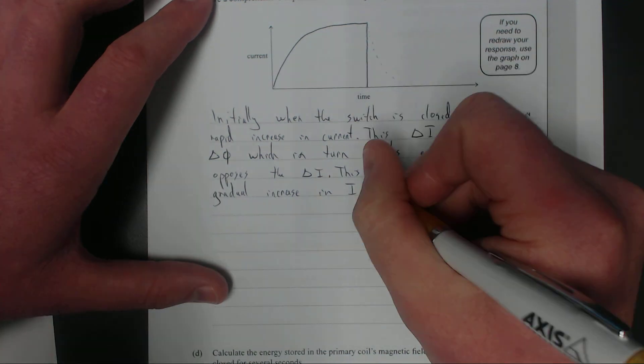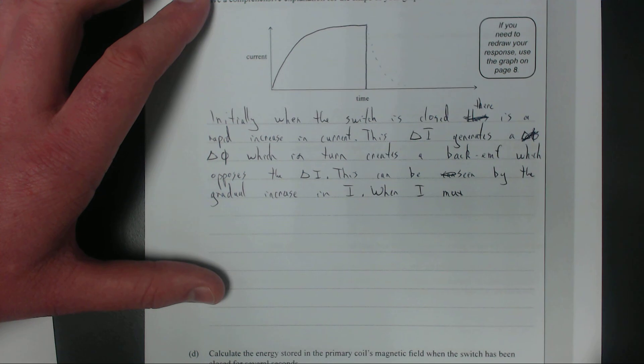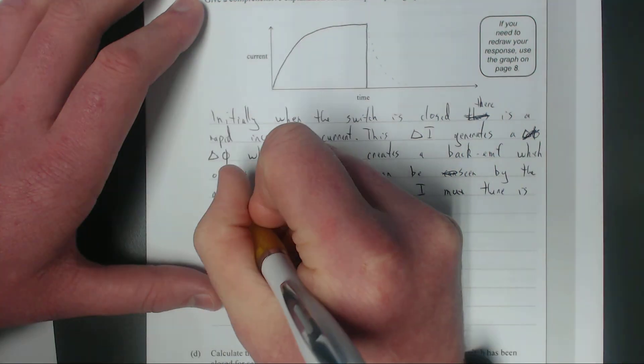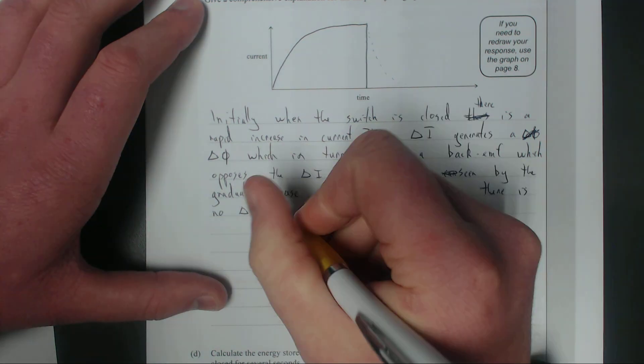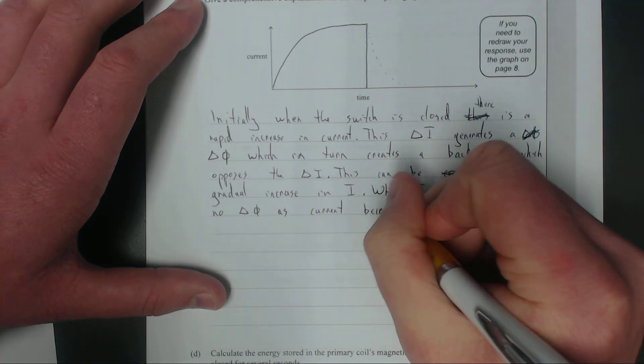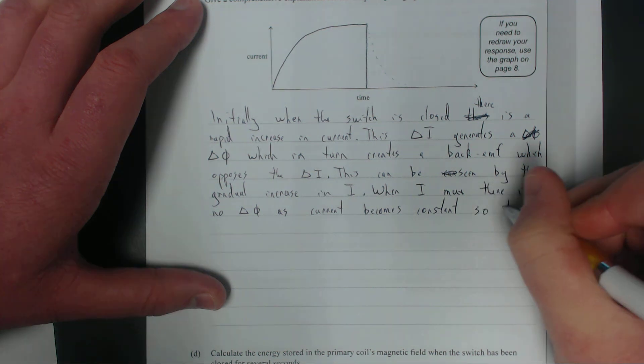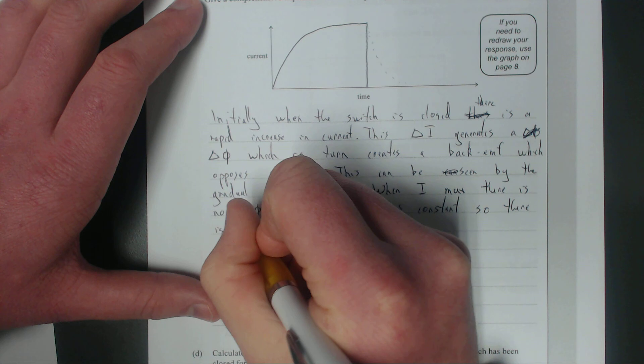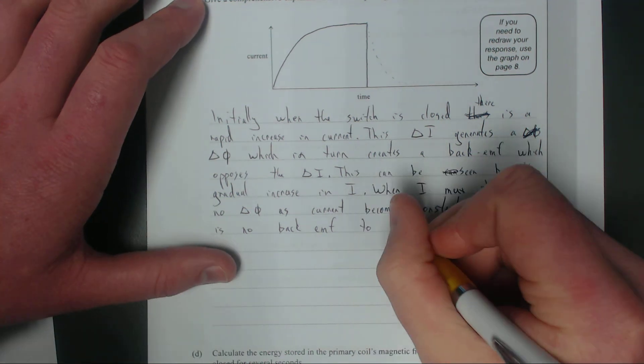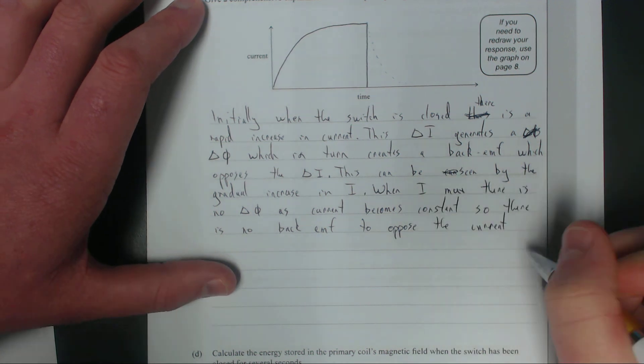When current is at max, I'll put capital I for max just because I'm lazy, you shouldn't really. There is no changing flux because there's no changing magnetic field because the current becomes stable. So there is no back EMF to oppose the current.